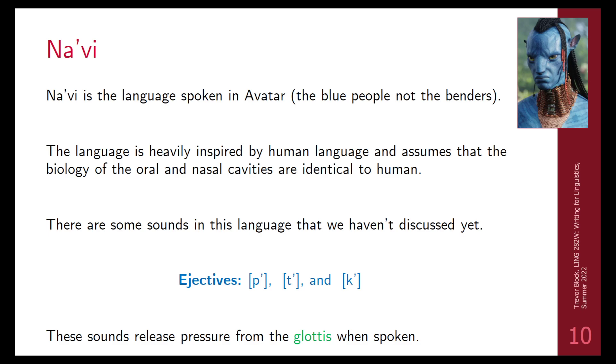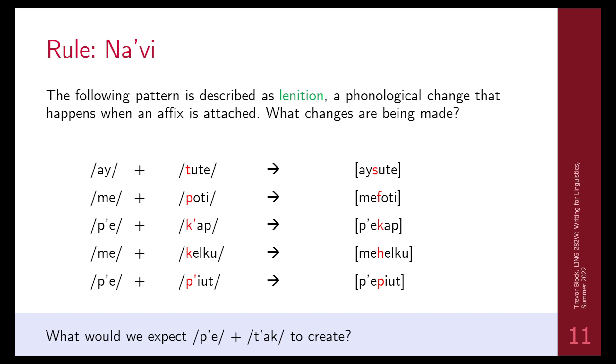Navi is from Avatar, not the airbenders. This one is heavily inspired by human languages, and there's not much uniqueness here. It's very well grounded in human language. There are some sounds that we haven't discussed yet called ejectives. Basically there's a burst of air from your glottis when you pronounce it. There's a very loud sound that comes from the glottis when they're pronounced. In this language, this has this pattern of something called lenition.